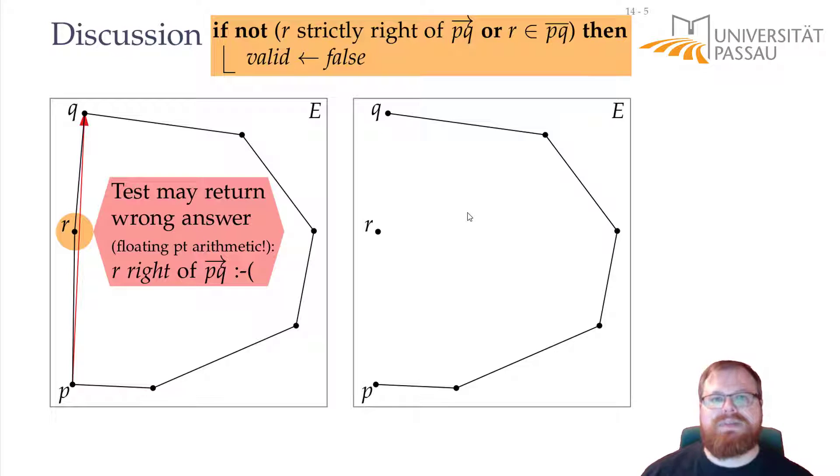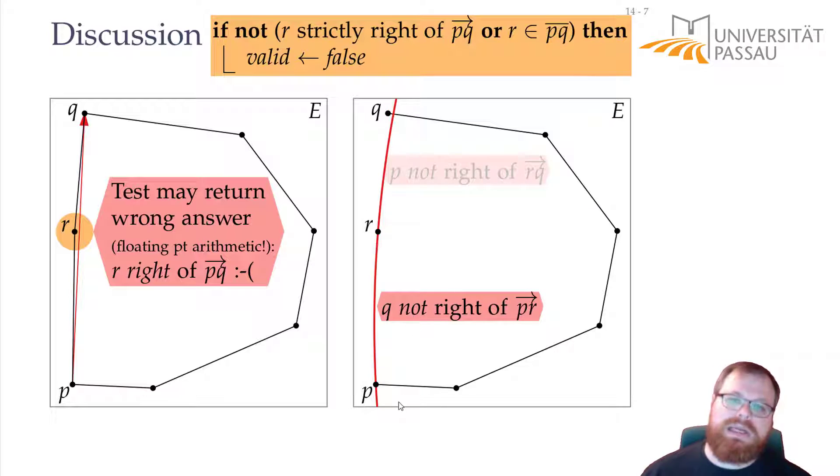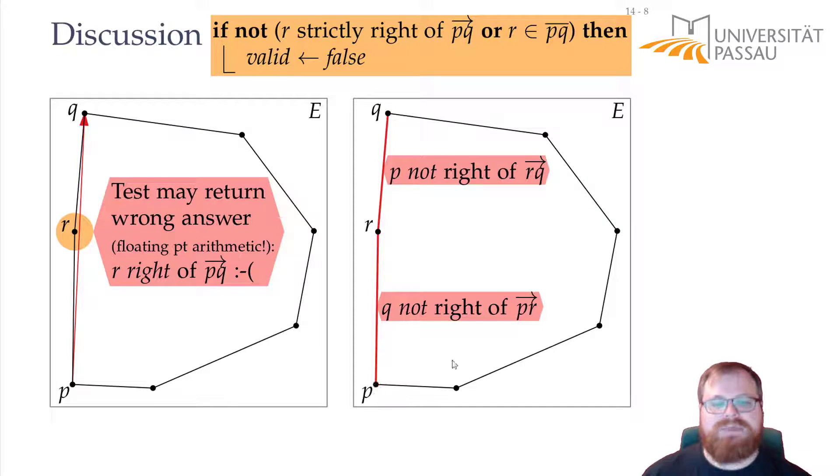And it can be so bad that you don't even get a convex hull at all. In this example, it can be that your computer says, well, p does not lie to the right of the segment from r to q. And q does not lie to the right of the segment from p to r. And then we have a problem. Because now none of these segments will be in our convex hull, this segment will not be in the convex hull, and what we get is not even a convex hull at all.